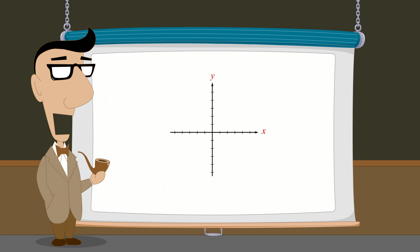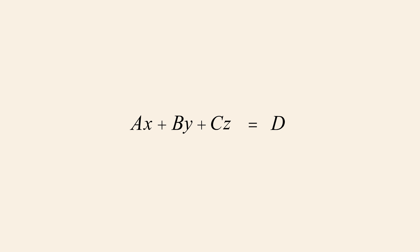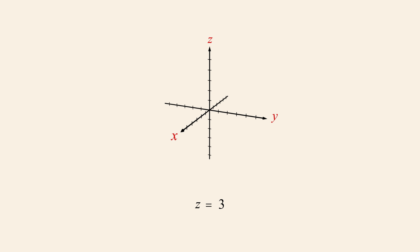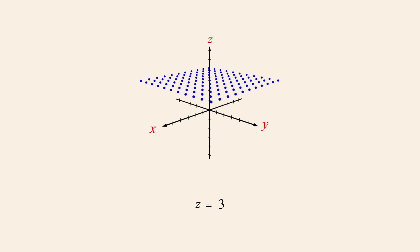Now let's try the same thing for a linear equation in three variables, setting the coefficients of all but one of the variables to zero. Let's start by setting a and b to zero and c to one. This eliminates all the variables but z. If we set the value of d to three, we get the linear equation z equals three. Since both x and y are free to take on any value, the graph of this equation consists of every point in three-dimensional space whose z-coordinate is three and x and y-coordinates are any real number. The graph of this equation is therefore a horizontal plane three units above the origin.